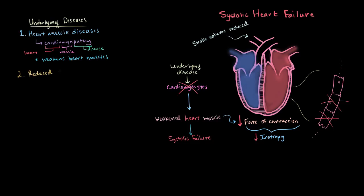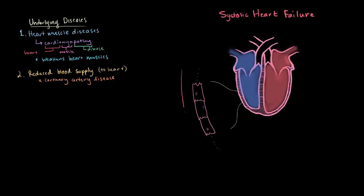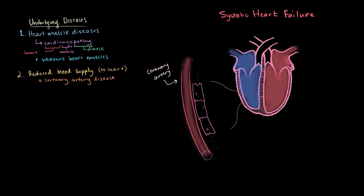The second category is reduced blood supply — not to the body, but to the heart itself. Coronary artery disease is a huge cause of systolic heart failure because the coronaries supply the heart with blood. Usually blood comes down through the coronary arteries giving oxygen to the muscle cells, but with coronary artery disease there's a narrowing of the vessel due to plaque buildup, which reduces blood supply to the muscle cells and those cells start to die off. When muscle cells die, the muscle gets weaker and it's harder to pump blood.